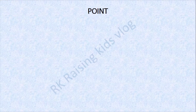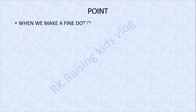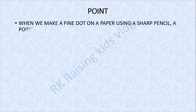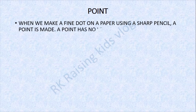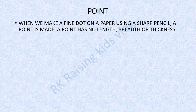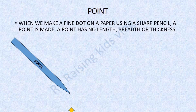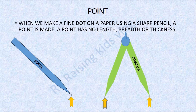Next: Point. So what is a point? When we make a fine dot on a paper using a sharp pencil, a point is made. A point has no length, breadth or thickness. Examples: the tip of a pencil, the tips of a compass.